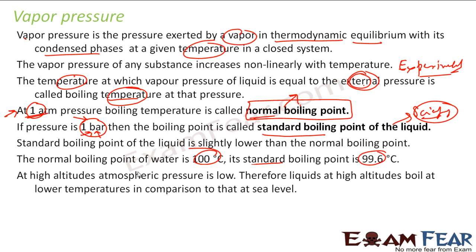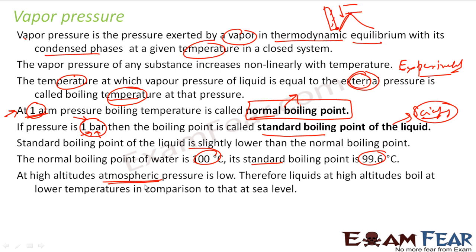At high altitude, the atmospheric pressure is low because there are fewer layers of atmosphere above you. Therefore, liquids at high altitude boil more easily at lower temperatures. For example, water that boils at 100 degrees Celsius at normal conditions may boil at around 80 degrees Celsius in the Himalayas — because the pressure is less, it boils more easily.